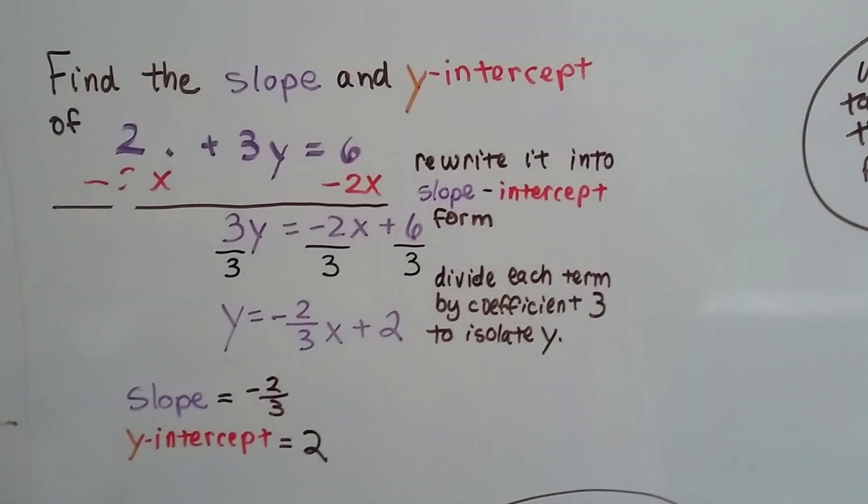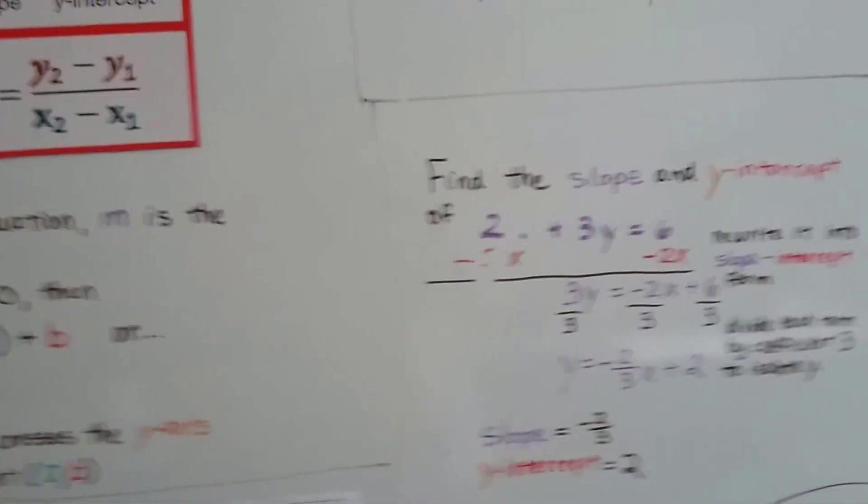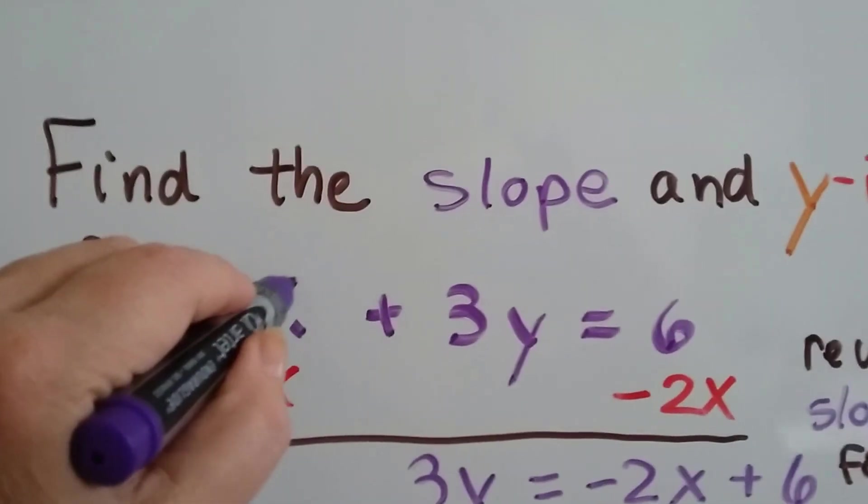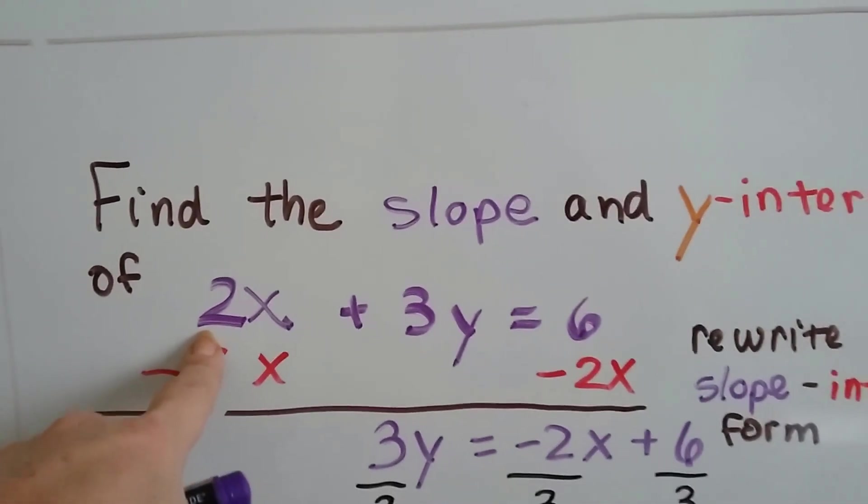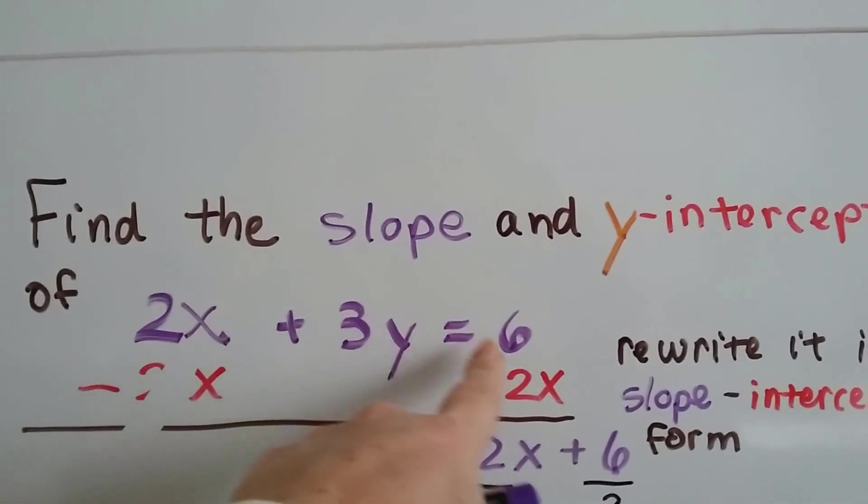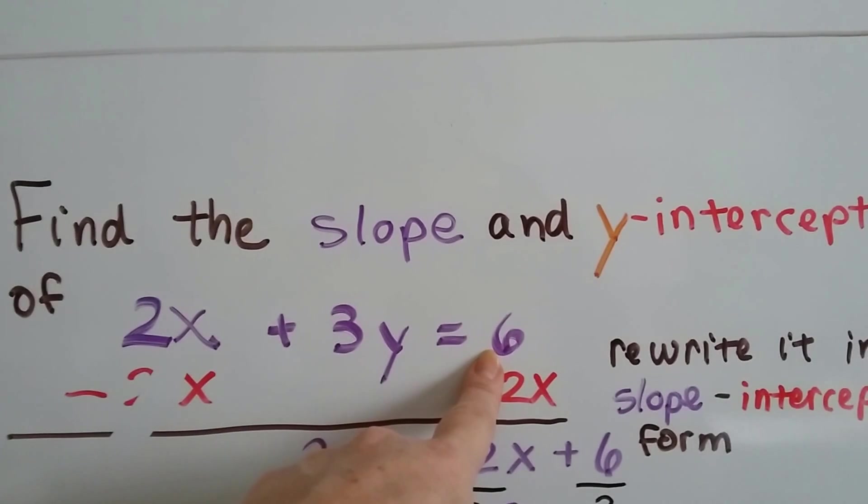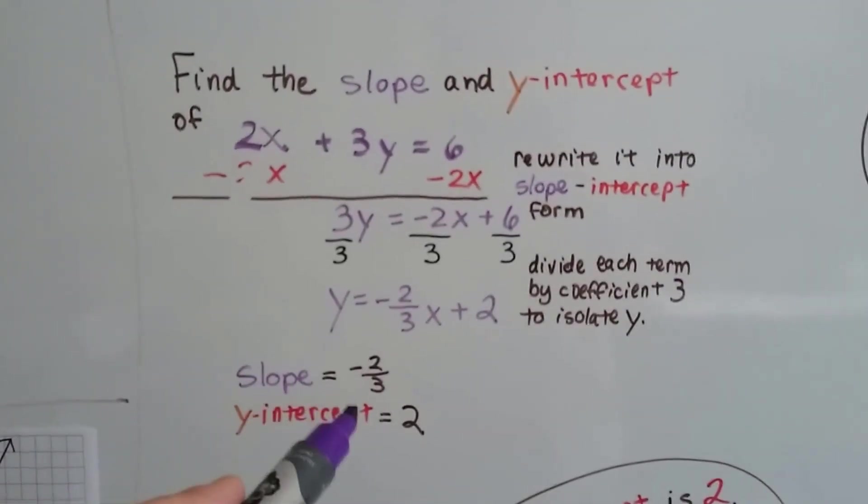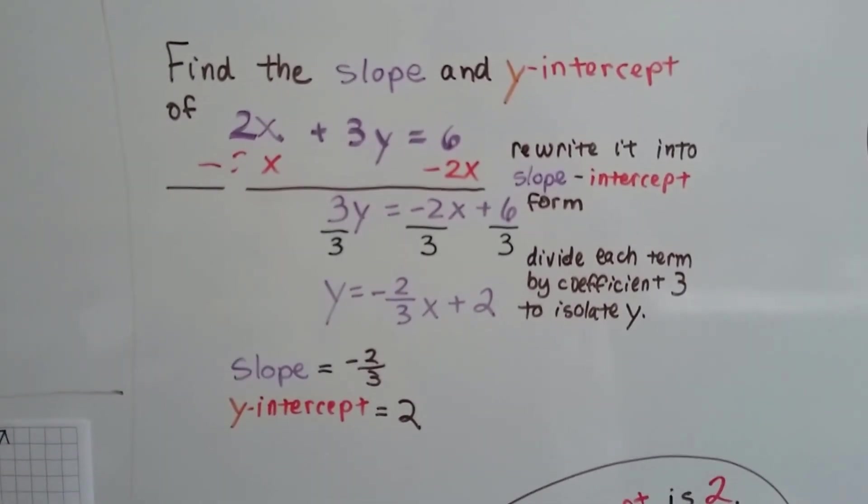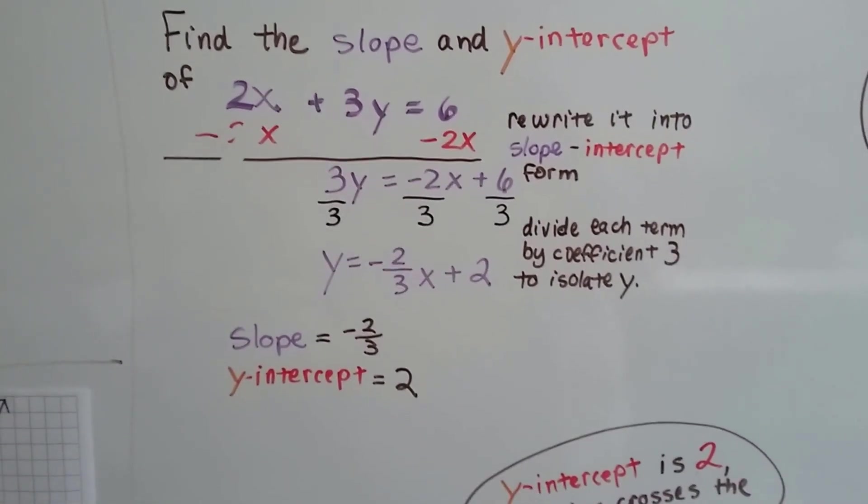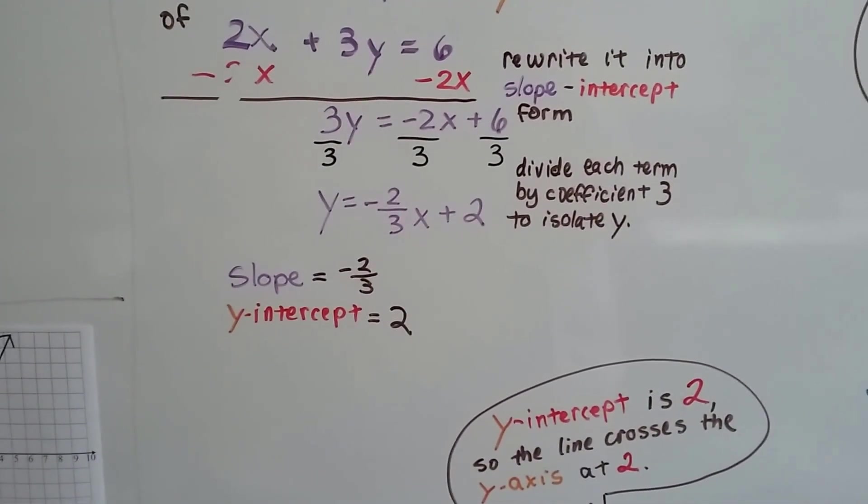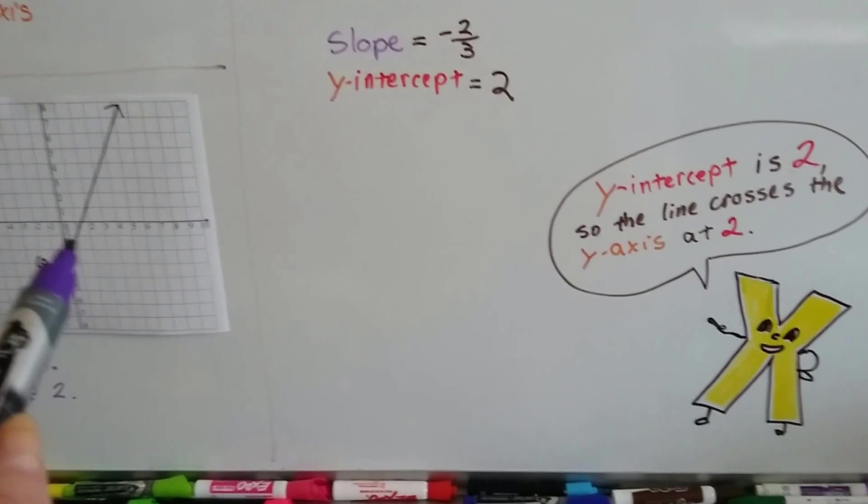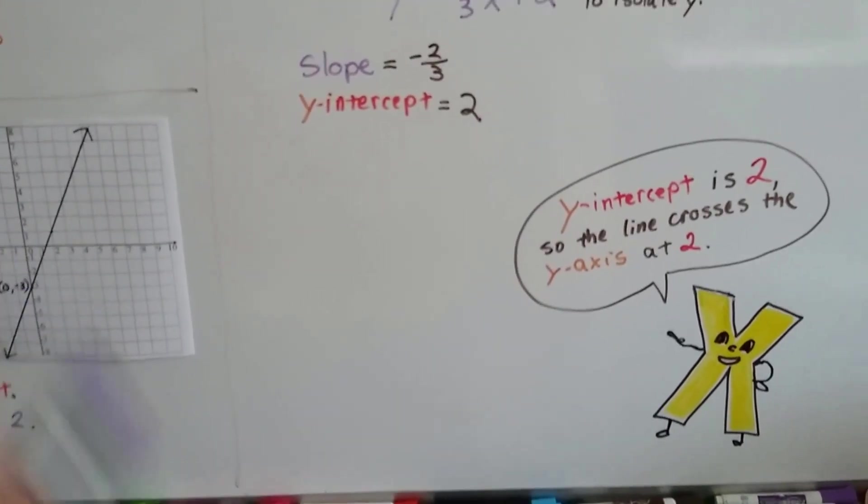Now, do you see the mistake we could have made if we mistakenly looked at this problem and said, oh, the slope is 2 because it's next to the x, and the y-intercept is 6 because this is the one that's all by itself. Well, it's not 2 for the slope. It's negative 2 thirds and it's not 6 for the y-intercept. It's only 2. The y-intercept is 2 so it crosses the y-axis at 2, up here at a positive 2.